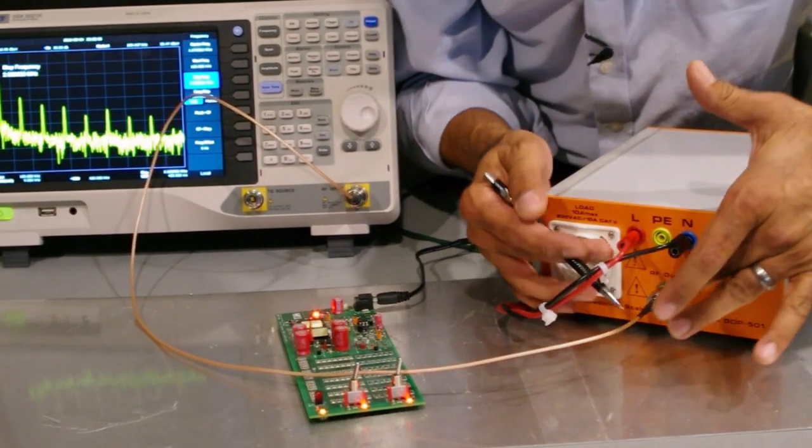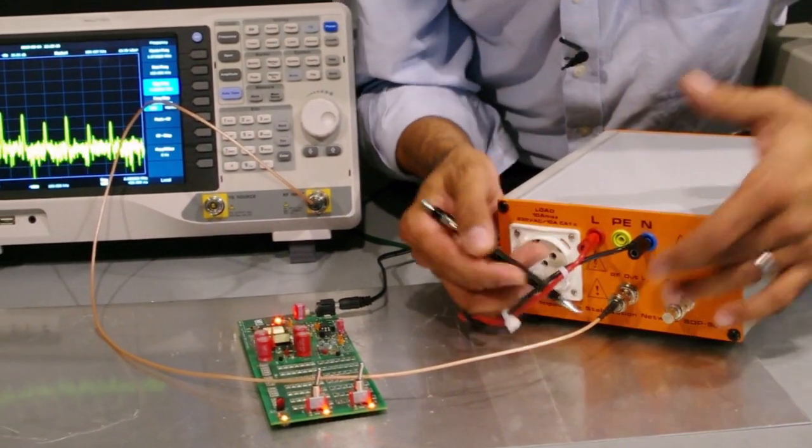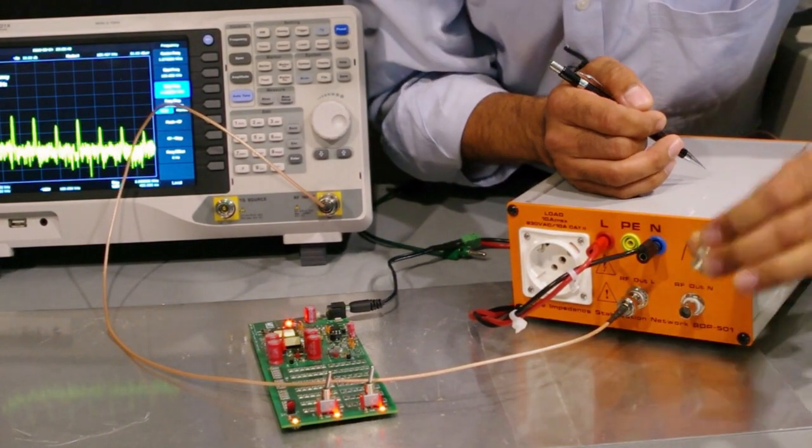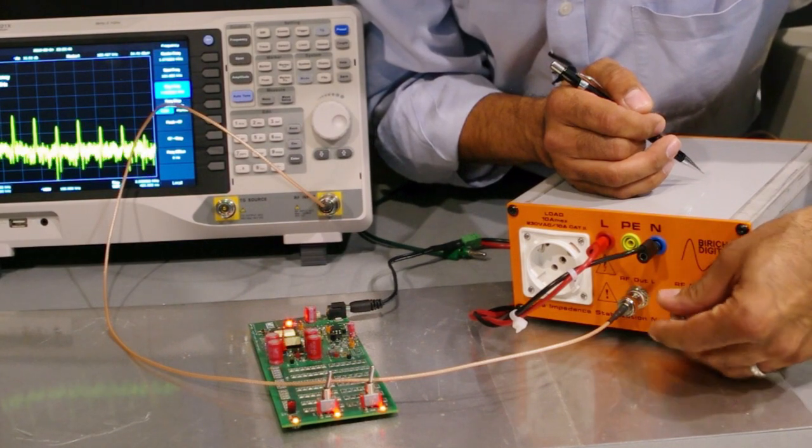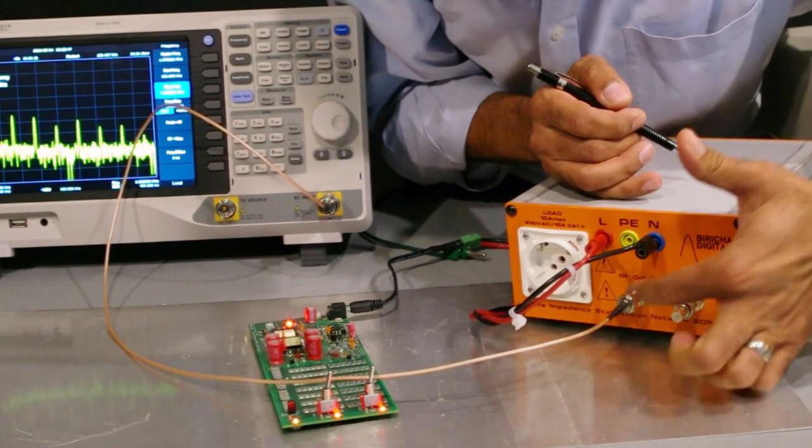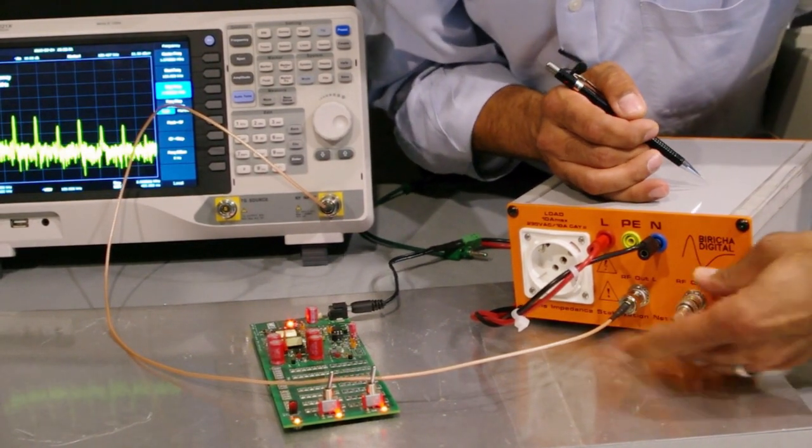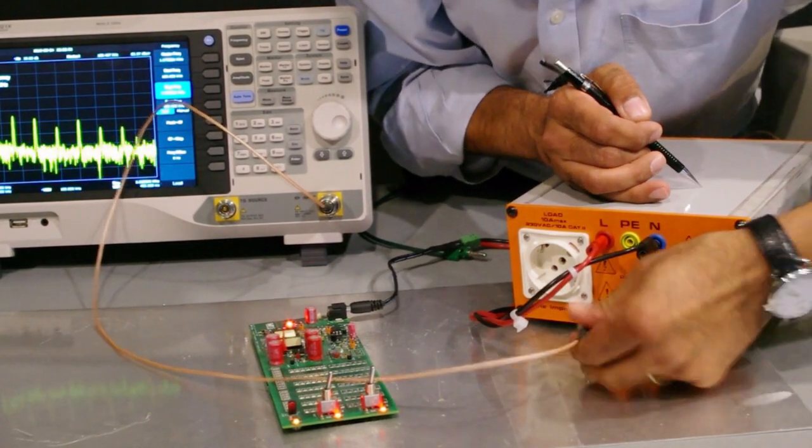If you have got two BNC connectors, one for positive one for negative or one for live one for neutral, then you need a 50-ohm terminator to make sure that everything is balanced. If you want to measure the noise on live or on positive, you put the terminator on the neutral, and if you want to measure it on the other line, you put the terminator on this line.